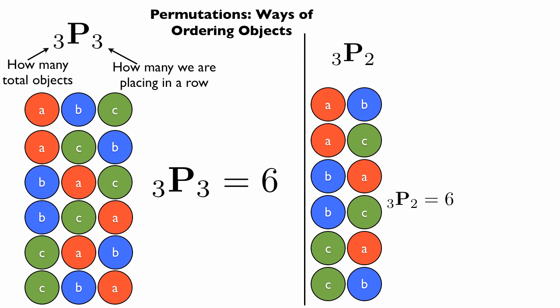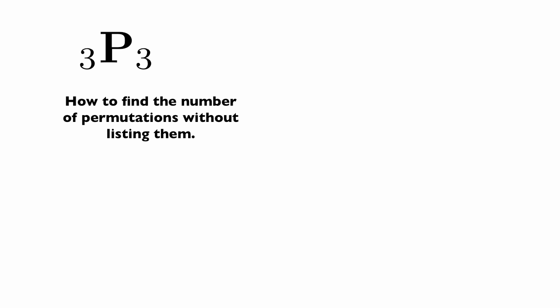Of course, the number is the same in this case, but here's a third example: 3P1. That's ways of putting one number in a row, which is just A, then B, then C. So 3P1 equals 3. By listing all these combinations, we could find out all the ways we can order objects. But this is going to take a long time if we get to bigger numbers, so let's try to find the number of permutations without listing them.